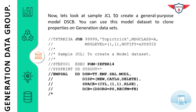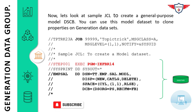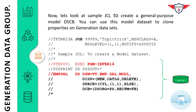Next is a JCL to create a model data set. The first two lines are the job card, followed by comment lines. The IEFBR14 utility is used to create a model data set — essentially a simple file whose properties can be cloned when creating generation data sets within the GDG base, so you don't need to re-specify all properties each time. The model data set is DT.EMP.SAL.MODEL, with disposition NEW, CATALOG, and DELETE, along with SPACE and DCB parameters. You can overwrite any of these parameters when creating an actual generation data set.